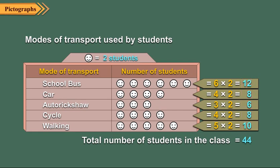Since the number of symbols against car and cycle is same, by just looking at the pictograph without calculating, you can say that the number of students using car and cycle is same. Also, the number of symbols against school bus is maximum. So, again looking at the pictograph, we can say that maximum number of students of this class come by a school bus.